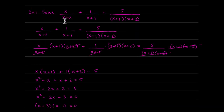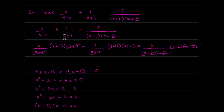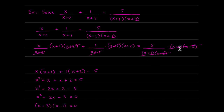For the next example: x over x plus 2 plus 1 over x plus 1 equals 5 over (x plus 1)(x plus 2). I find the LCD — multiplying by x plus 2 removes the first denominator, multiplying by x plus 1 removes the second, and together they remove the third. So the LCD is x plus 1 times x plus 2. Multiplying each term: the entire denominator cancels on the right, only x plus 1 cancels in the middle, and only x plus 2 cancels on the left.